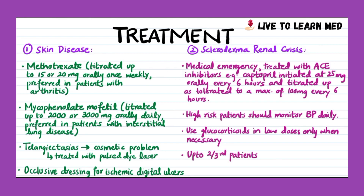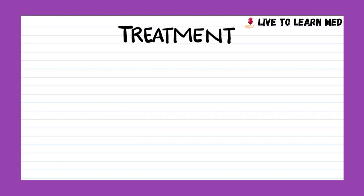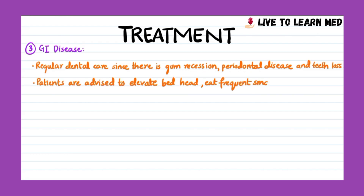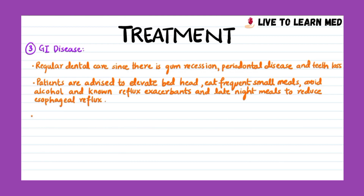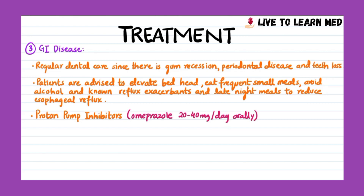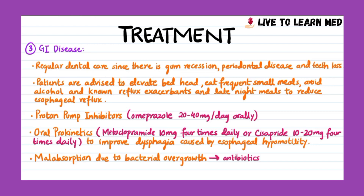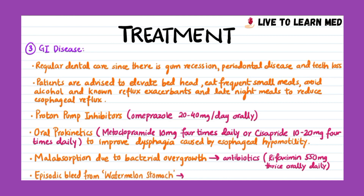Up to two-thirds of systemic sclerosis patients with renal crisis necessitate dialysis. For gastrointestinal manifestations, regular dental care is recommended to avoid periodontal disease. Patients are advised to elevate the head end of the bed, eat frequent small meals, avoid alcohol and known reflux exacerbants, and avoid late night meals. Proton pump inhibitors such as omeprazole 20–40 mg per day orally are recommended. Oral prokinetic agents such as metoclopramide 10 mg four times daily or cisapride 10–20 mg four times daily can improve dysphagia caused by esophageal hypomotility. Malabsorption due to bacterial overgrowth responds to antibiotics such as rifaximin 550 mg three times daily. Episodic bleeding from watermelon stomach is treated with endoscopic ablation.